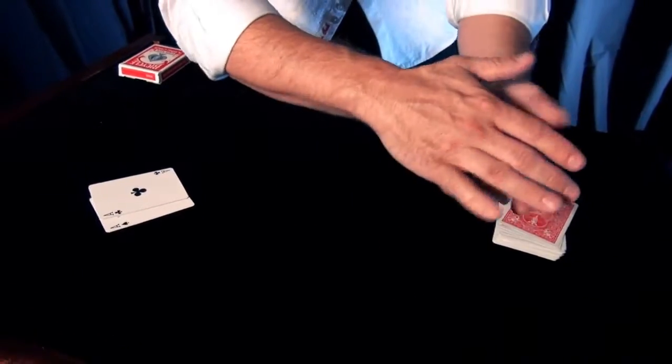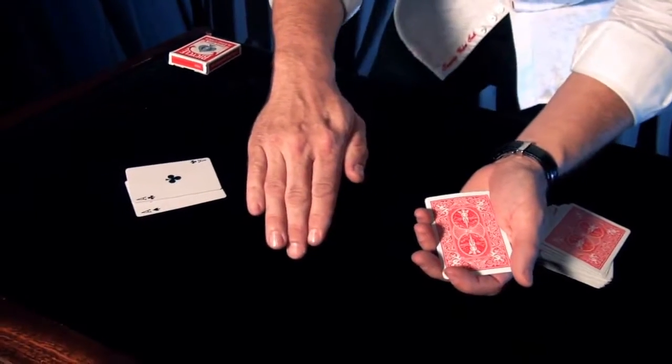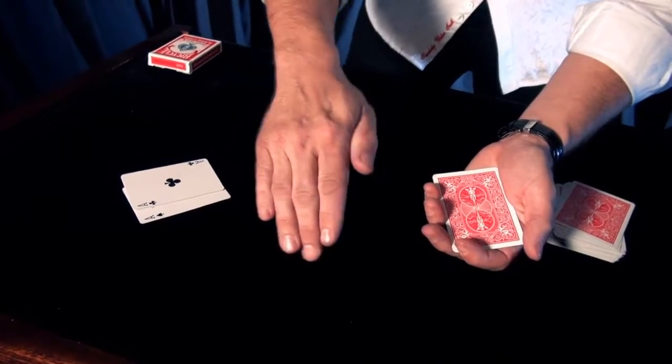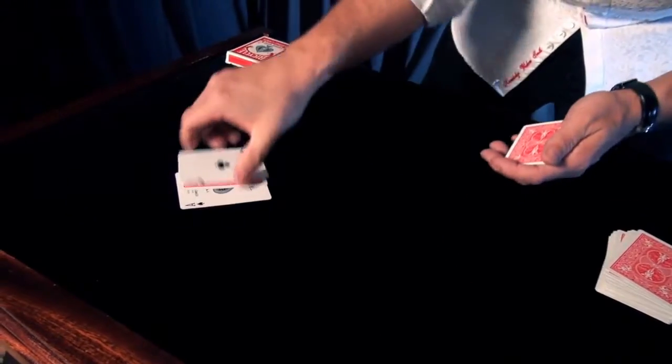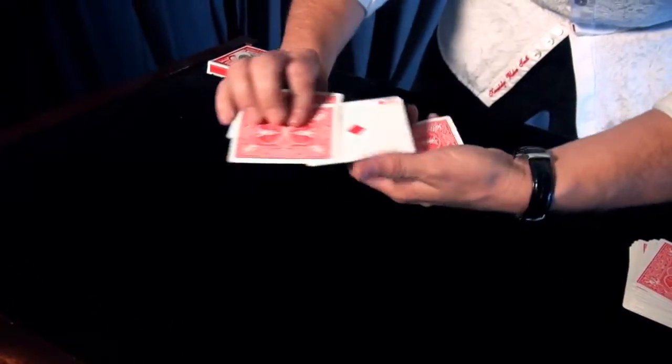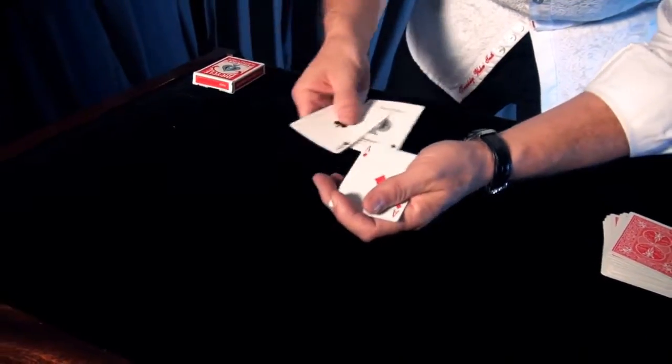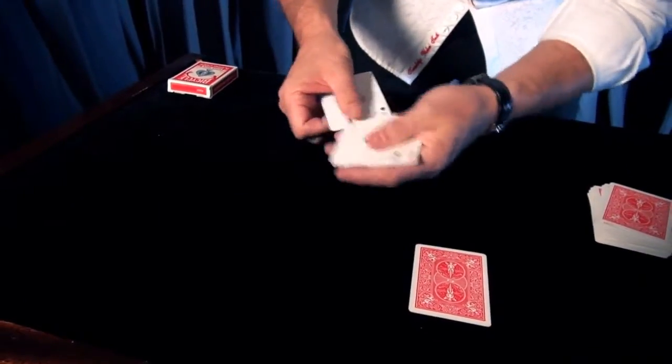This time we're going to actually take the ace of diamonds. We're going to do a move called the invisible palm. It looks really good from this angle. It looks really good from this side, too. Actually, you can't see that palmed card until you set it down on the table. So if you look right here, that would be the ace of diamonds in between the club and the spade.